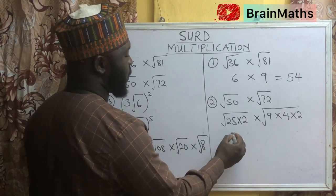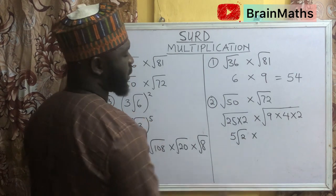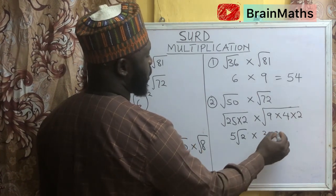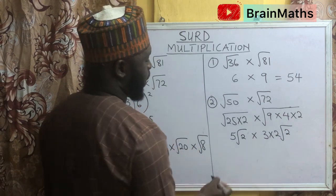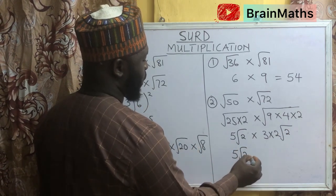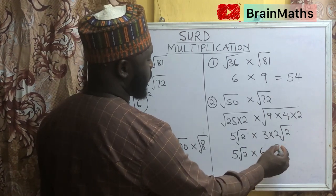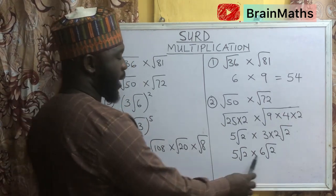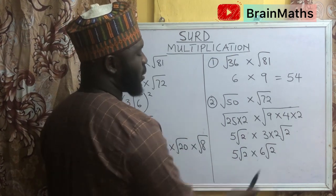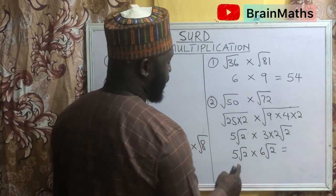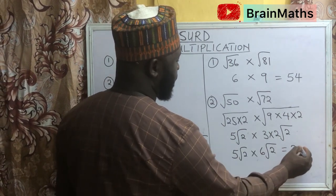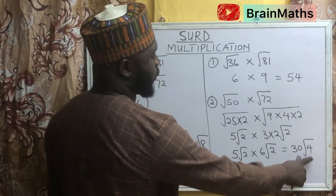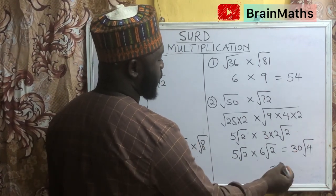Square root of 25 is 5, multiplied by root 2, times square root of 9 is 3, square root of 4 is 2, multiplied by root 2. We have 5 root 2 times 3 times 2, which is 6, with another root 2. The rule of multiplication is that you multiply the numbers together and multiply the roots together. This gives us 5 times 6 equals 30, and root 2 times root 2 gives us root 4. Root 4 is 2, so 30 times 2 gives us 60.